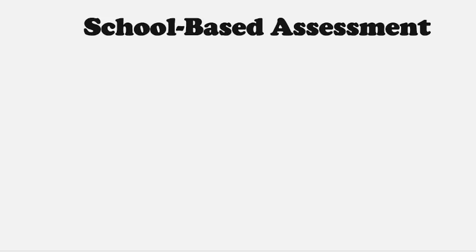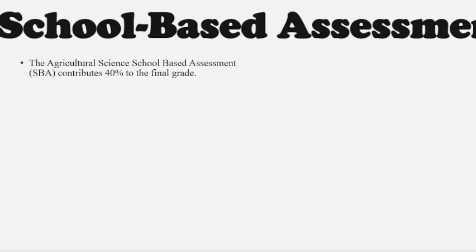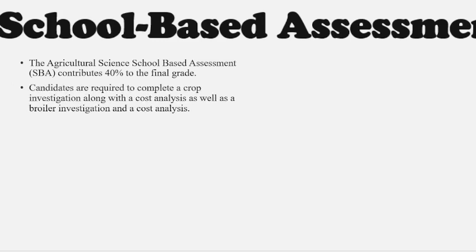I am going to be looking at the broiler SBA, and you can formulate your steps for your crop SBA. School-based assessment is completed and assessed at the school level. The Agricultural Science SBA contributes 40 percent to the student's final grade. Candidates are required to complete a crop investigation along with a cost analysis, as well as a broiler investigation and a cost analysis.